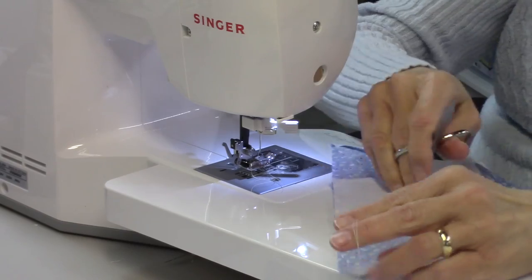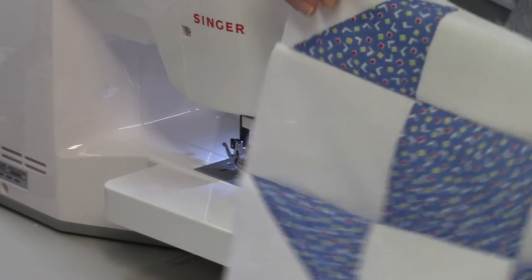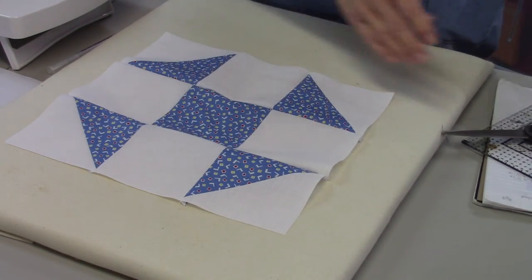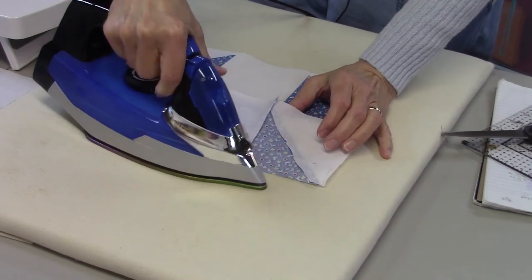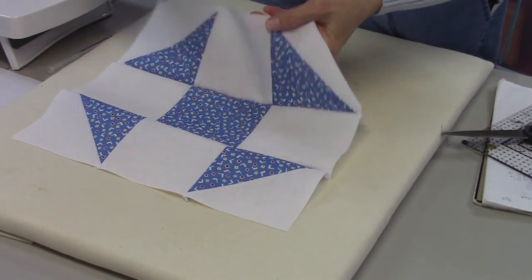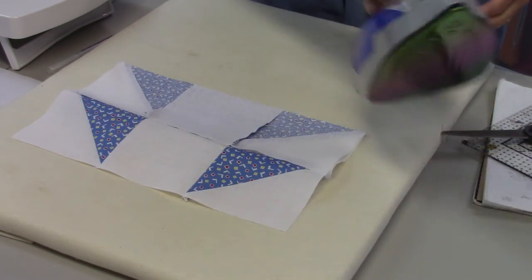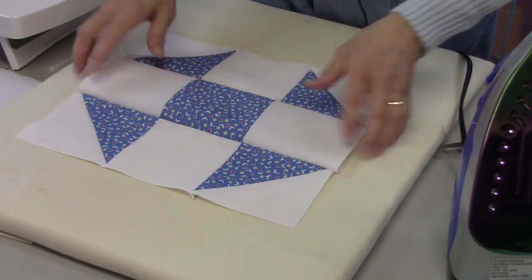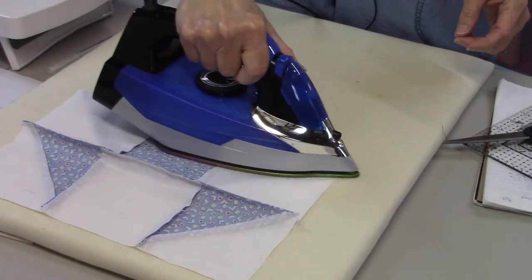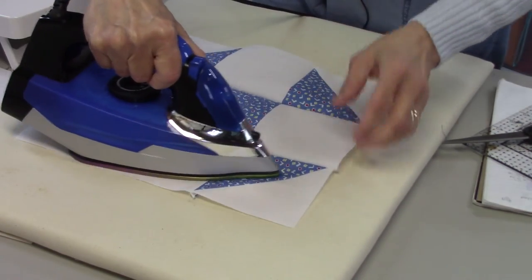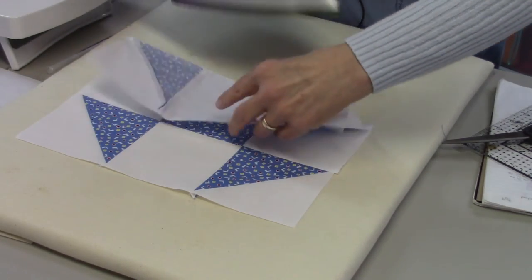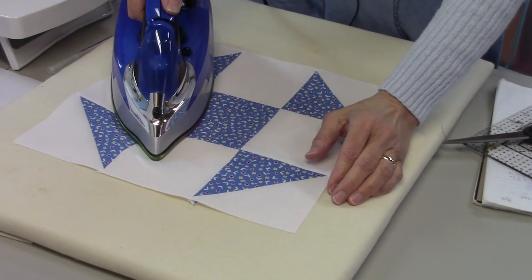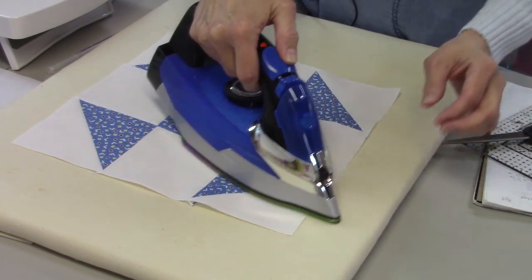Now the block is done—we just need to press it open. So here the block is ready, and I'm going to press the seams the way they were sewn, just press them flat. And then once again, you can choose whichever way you want these to lay. I'm going to have them all going towards the center block to see how that works. And give it a little bit of steam to get it nice and flat.